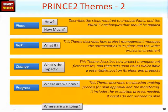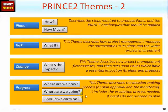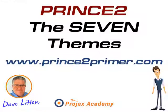The PROGRESS theme answers the questions: where are we now, where are we going, and should we carry on? This theme describes the decision-making process for, initially, plan approval and then the ongoing monitoring. It also includes management by exception and the escalation process, if needed, if tolerance is forecast to be exceeded. So those, then, are the 7 PRINCE2 themes.